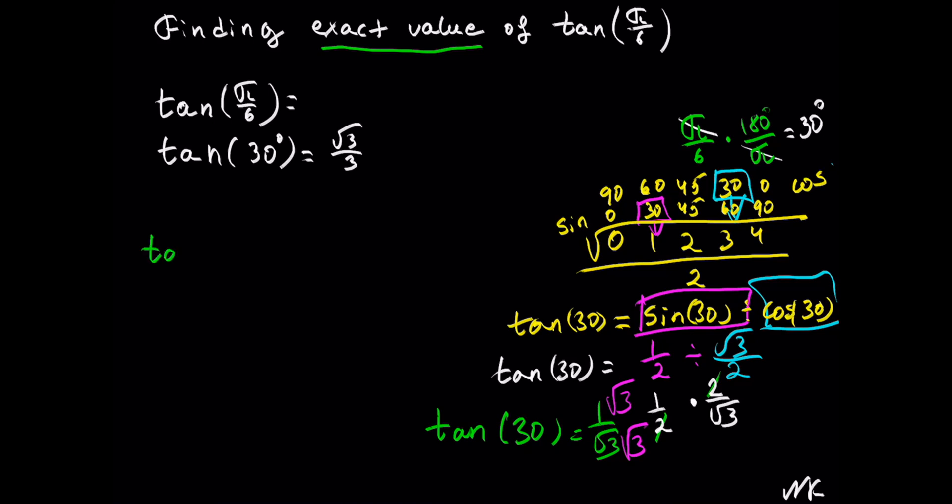This gives us tan(30°). We get 1 times √3 in the numerator, so we have √3. In the denominator, √3 times √3 gives us 3. So tan(30°) = √3/3.